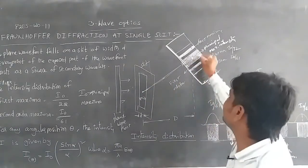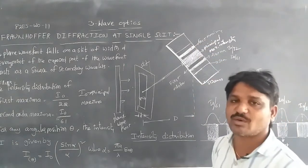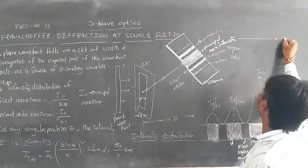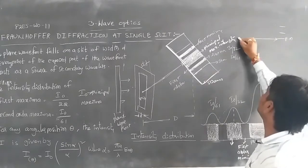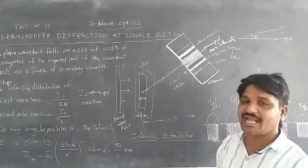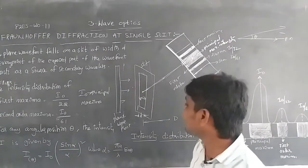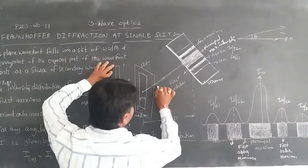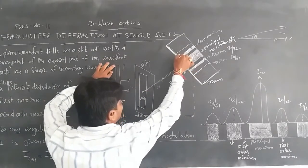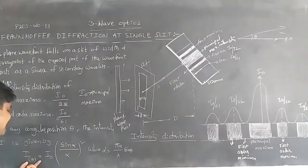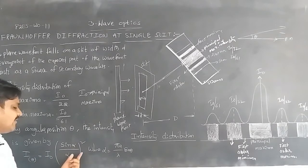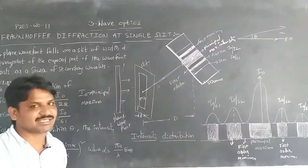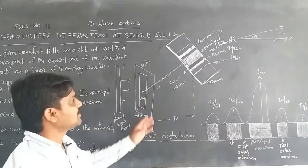When light travels at different positions — first order, second order, or any order of maxima or minima — it makes an angle theta with the principal maximum direction. For any angular position theta, the intensity I(θ) is given by I(θ) = I₀ (sinα/α)², where α = πa/λ sinθ.